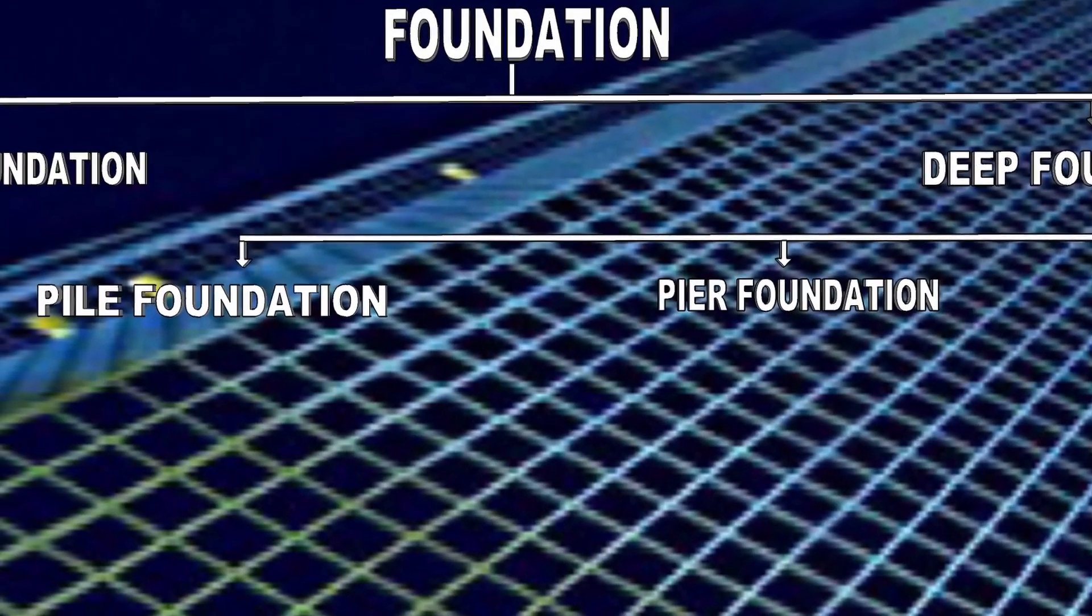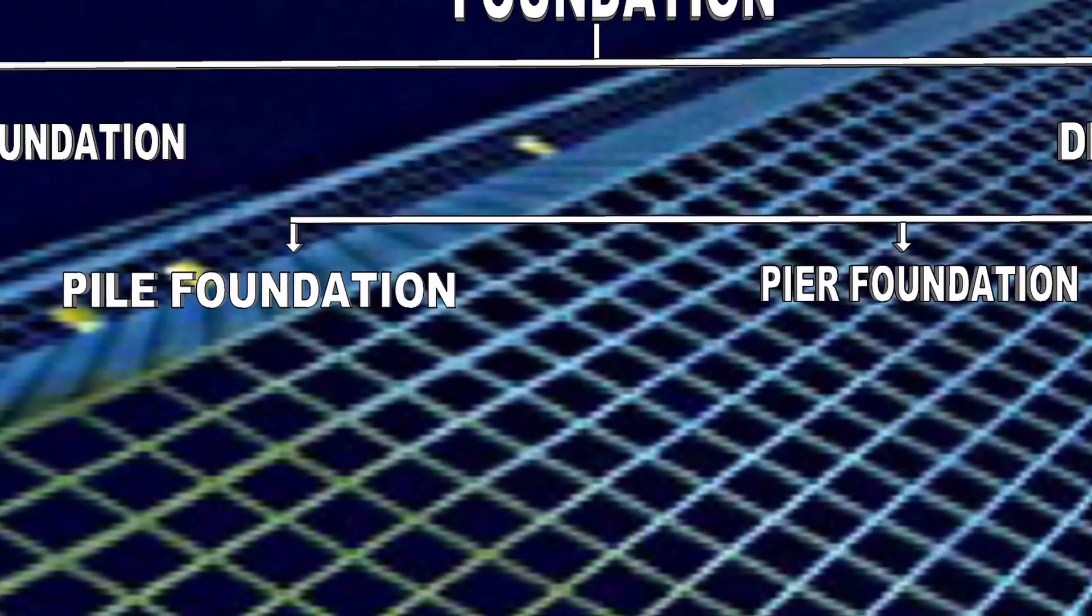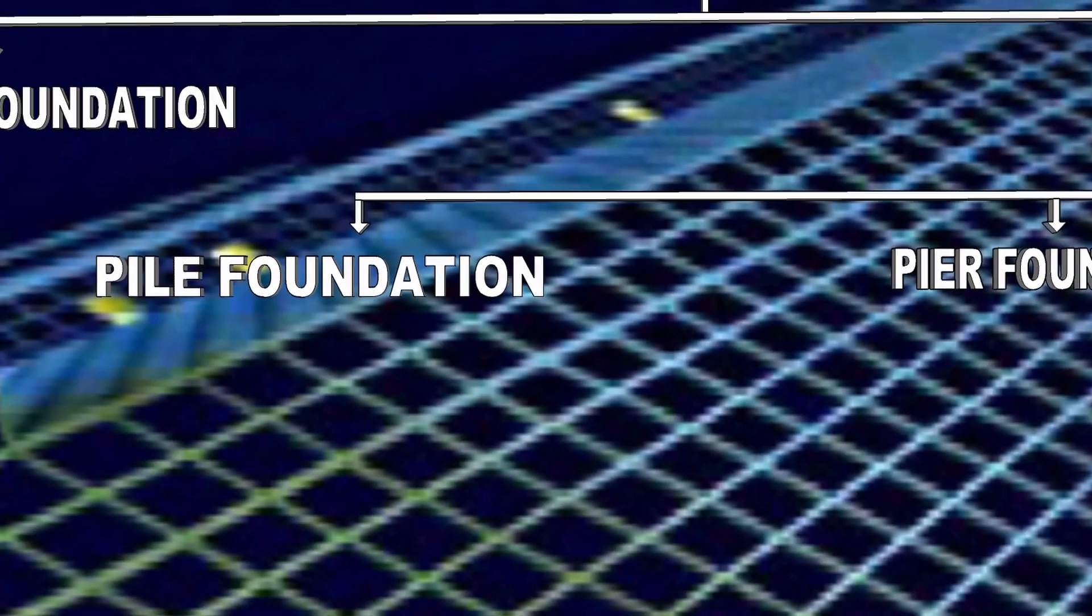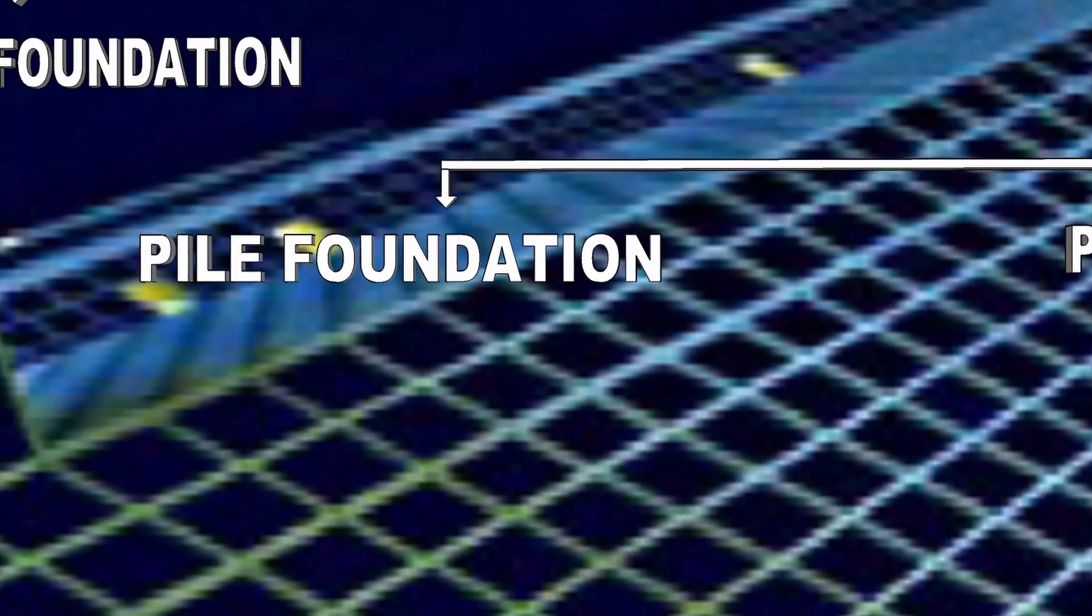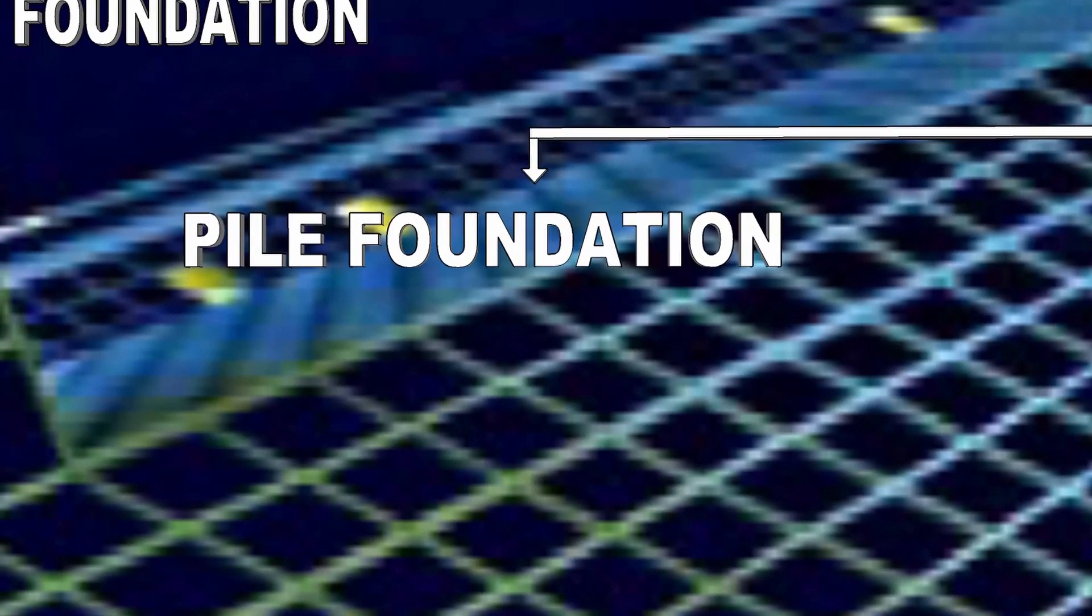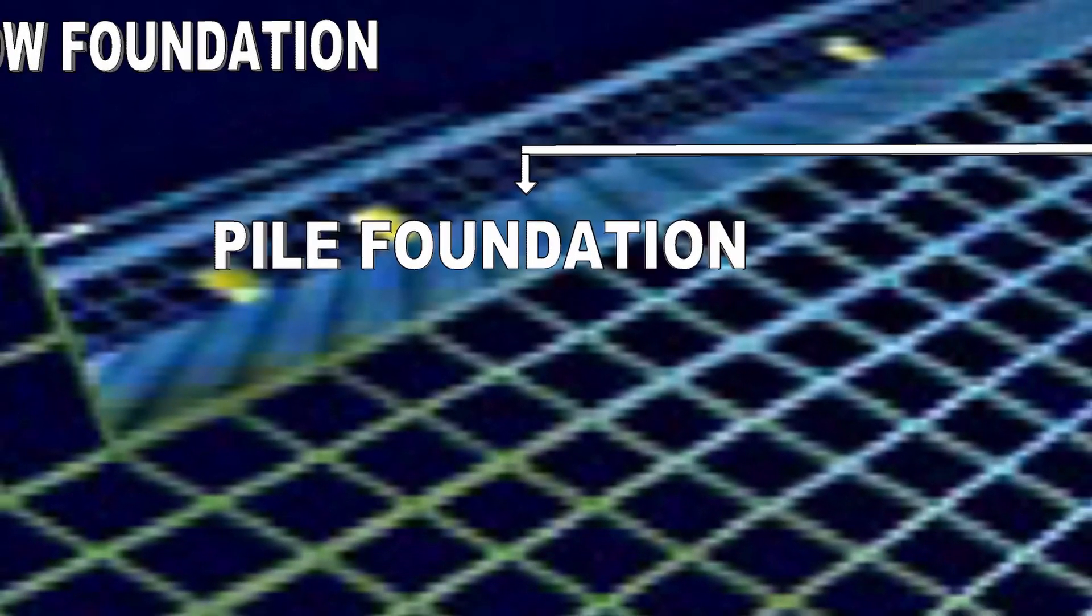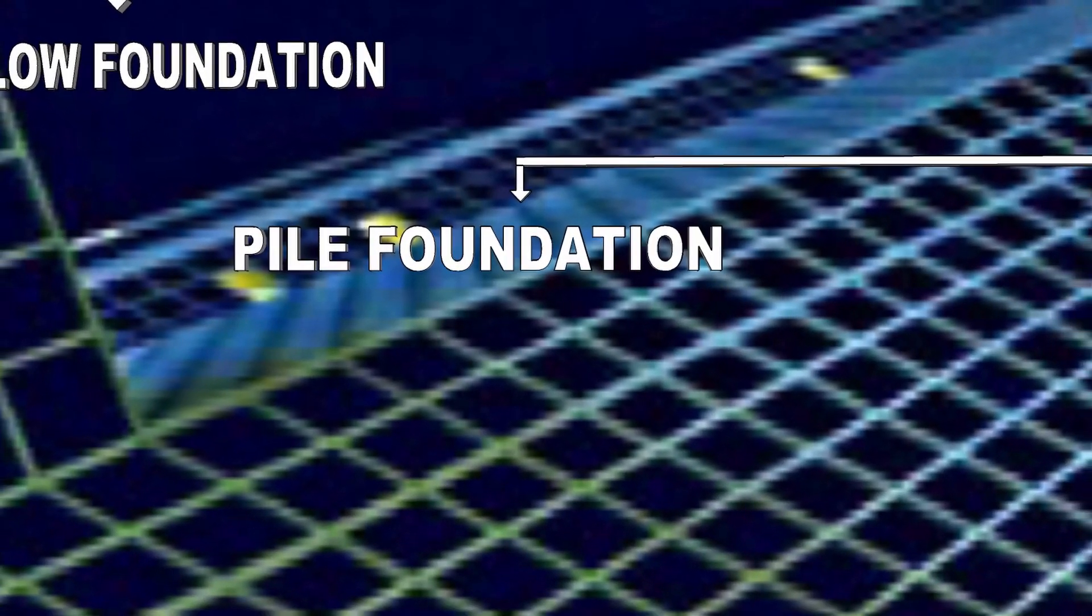The load of the superstructure is heavy and its distribution is uneven. The topsoil is poor in bearing capacity and is of expansive in nature. The subsoil water level is high so that pumping of the water becomes uneconomical. There is large fluctuation in subsoil water.